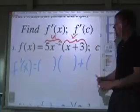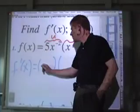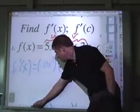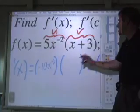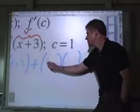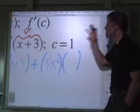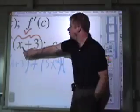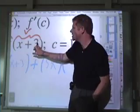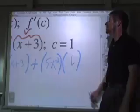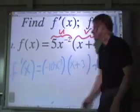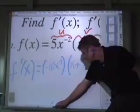So this is the structure of the answer. Derivative of the first times the second plus first times the derivative of the second. So as you're going through here, you write the derivative of the first is negative ten x to the negative three. That's derivative of the first times the second, which is just x plus three. Derivative of the first times the second plus first, which is five x to the negative two times the derivative of the second. Well, the second is a binomial and it's a sum. So the derivative of the sum is the sum of the derivative. So take the derivative of each term individually. The derivative of x is just plain one. The derivative of three is zero. Add them up. And there we have the answer for the product rule.